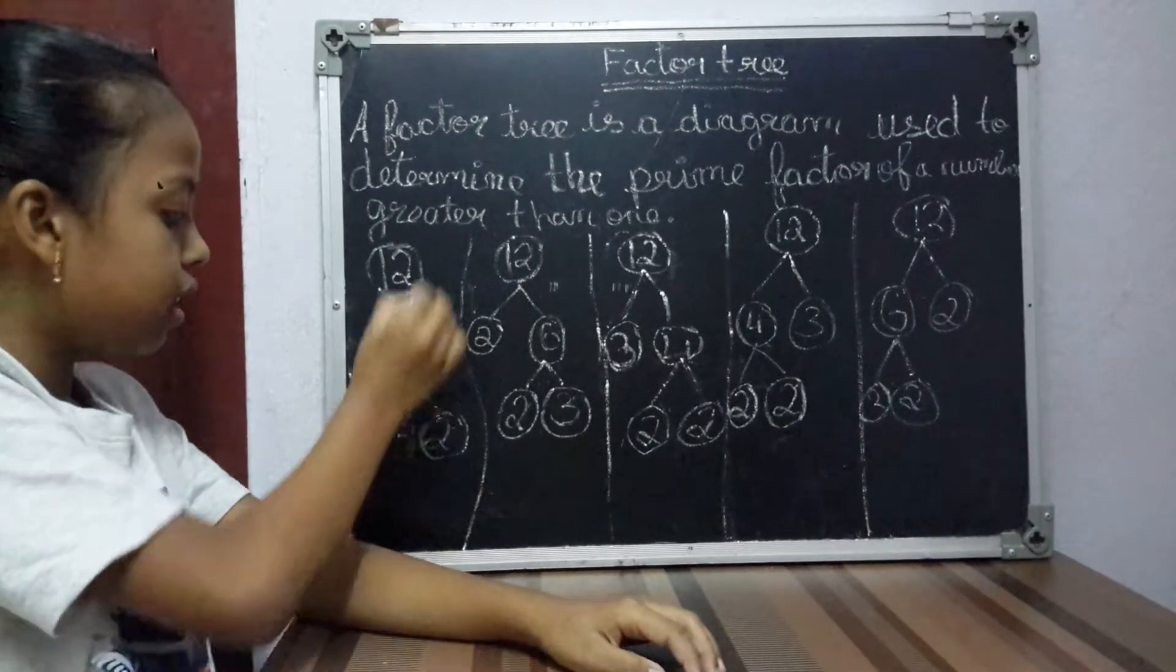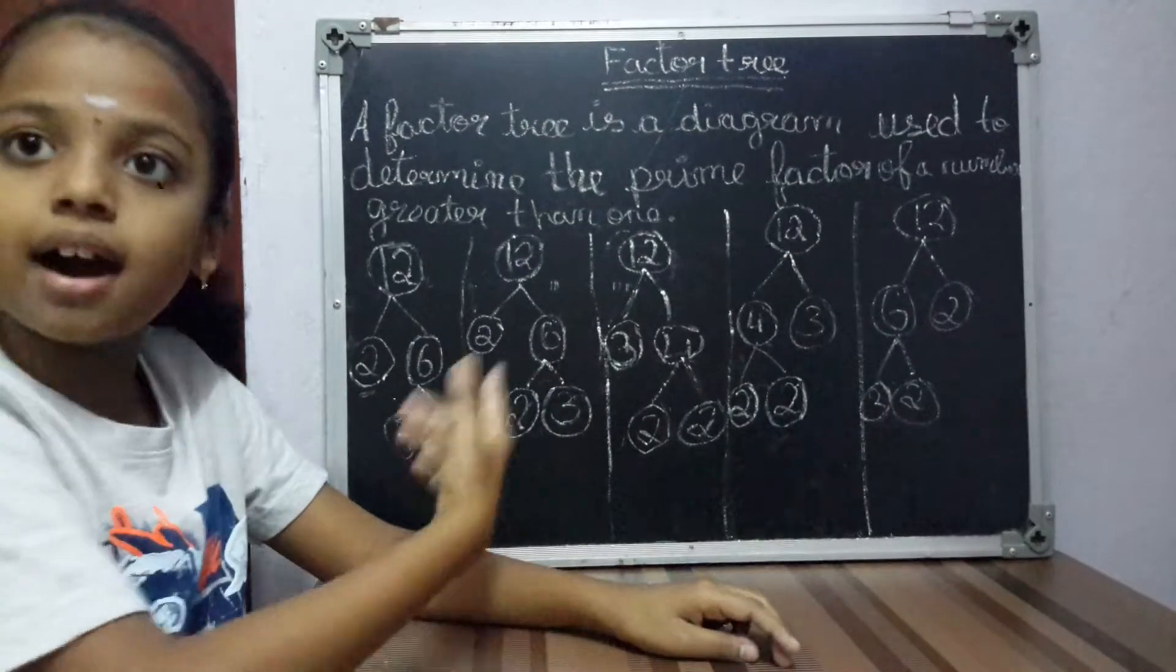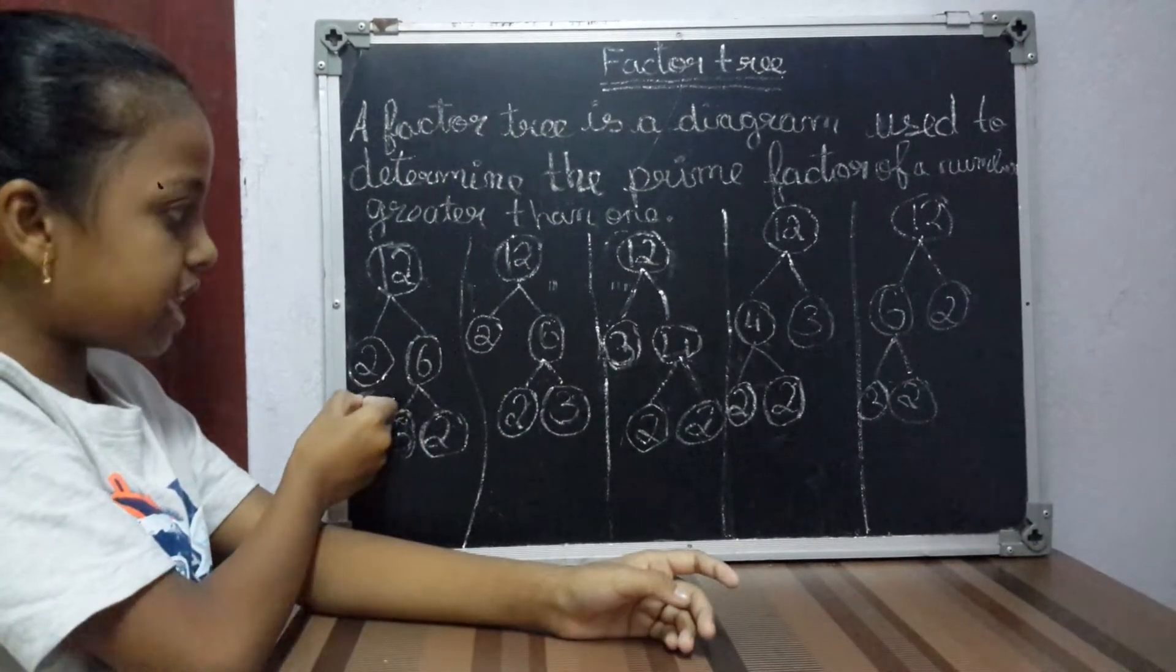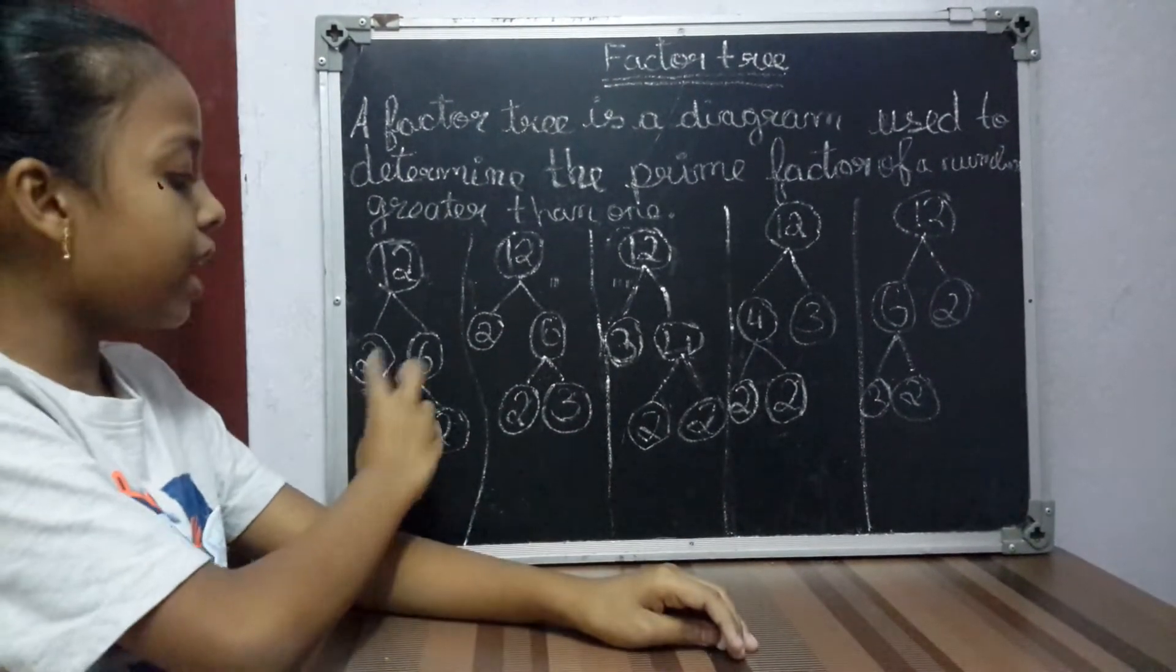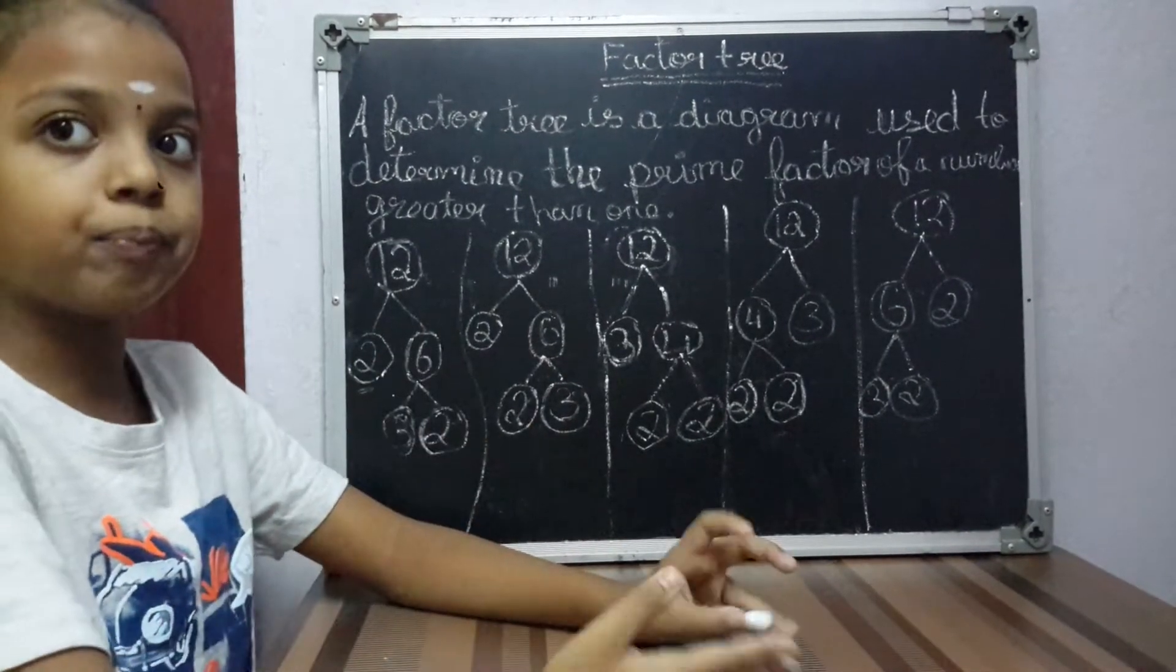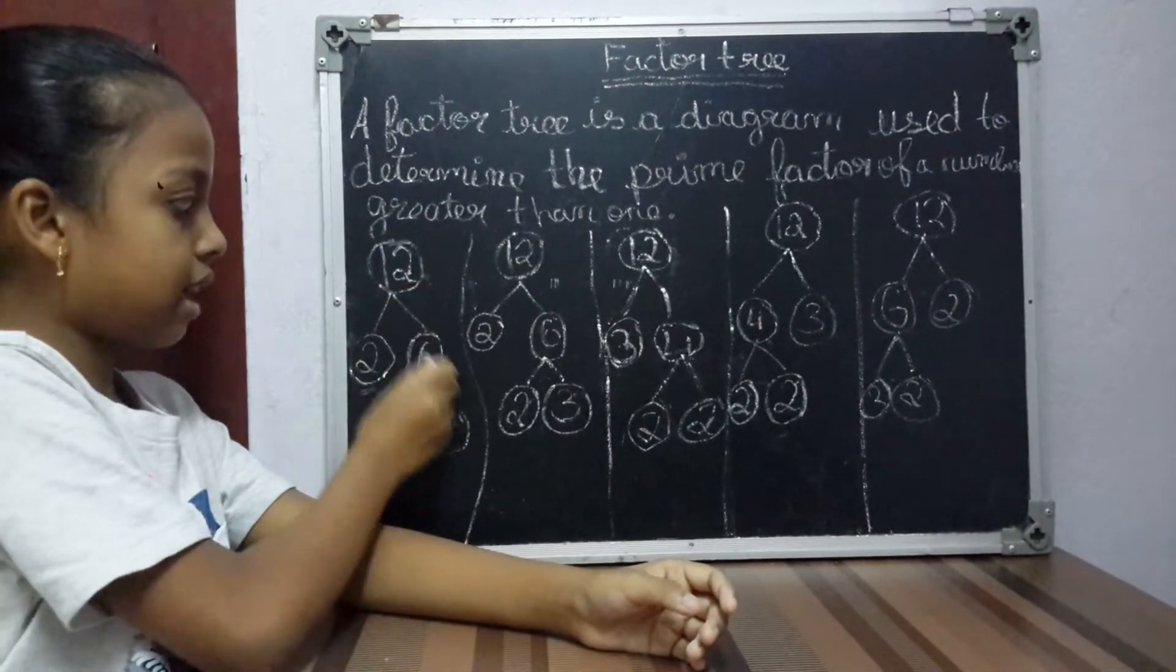Now you can take any of the number's tables and make a factor tree. I am taking the table 2. 2 sixes are 12, right? This can also be changed and written: 6 twos are 12. We can also exchange the numbers and still the number can come. So now, 12: 2 sixes are 12.